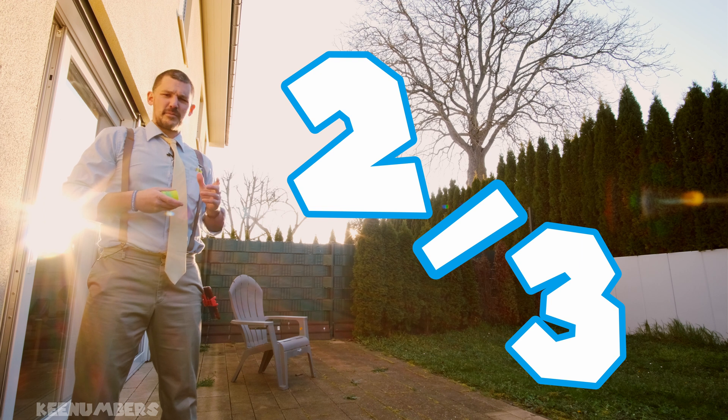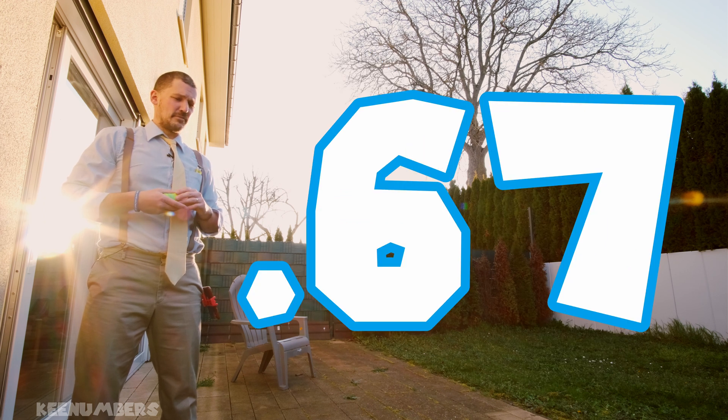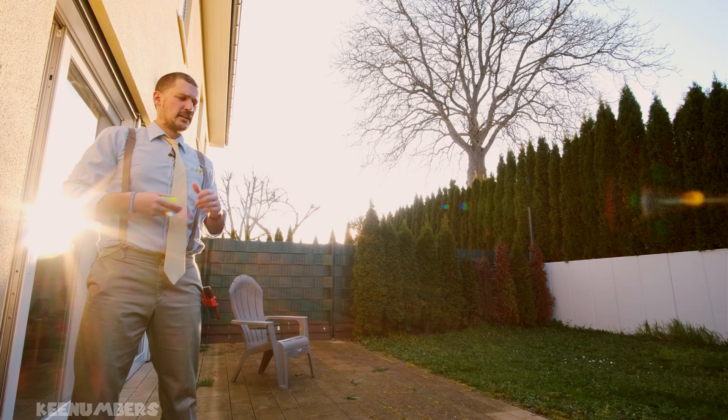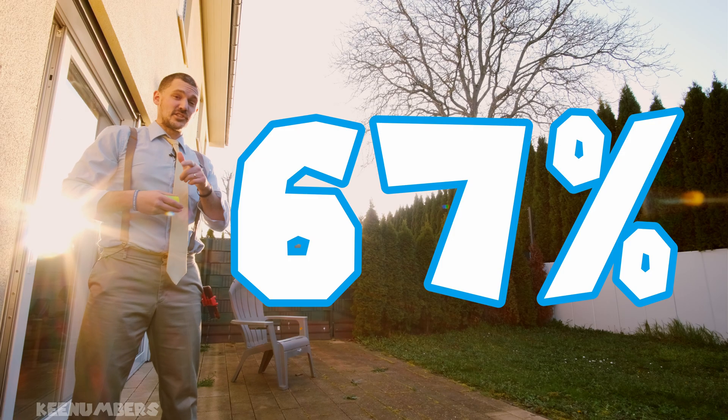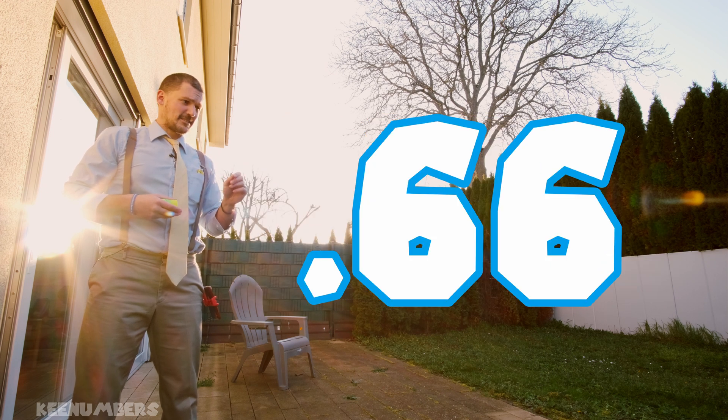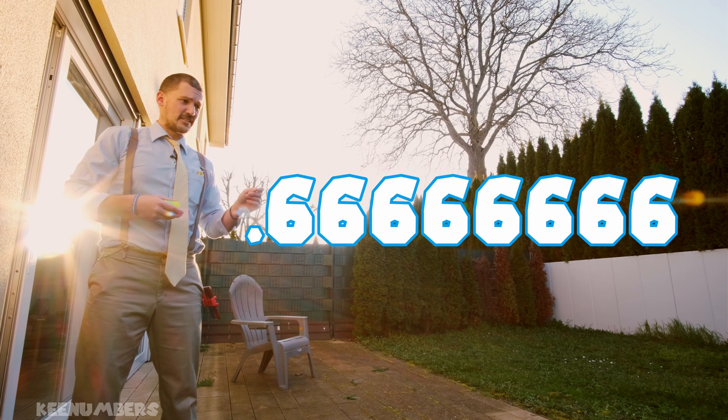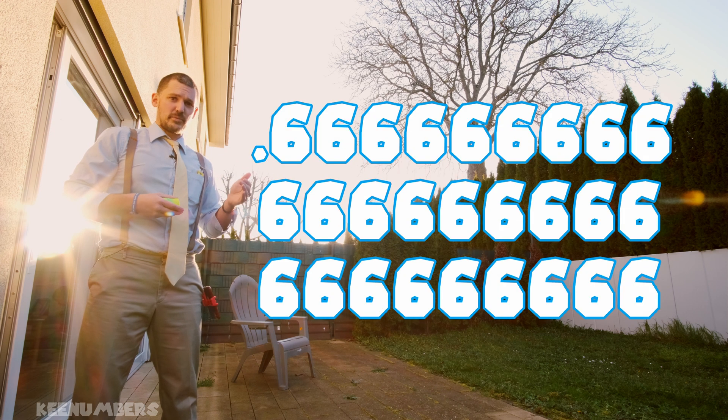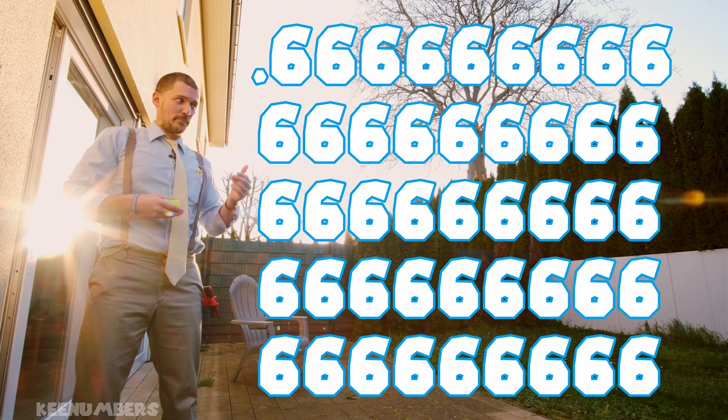Two thirds is commonly written as .67. It's called rounding up. Or, in that case, 67%. Now, if you actually write out the division, you'll get .66666666 and they never stop. It just keeps repeating itself. That's what we call a never-ending repeating decimal.